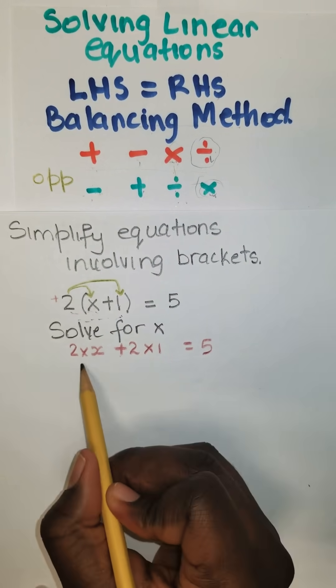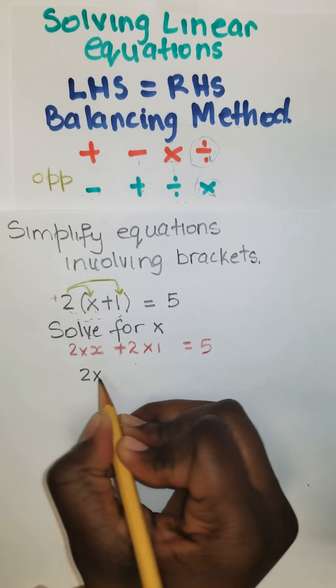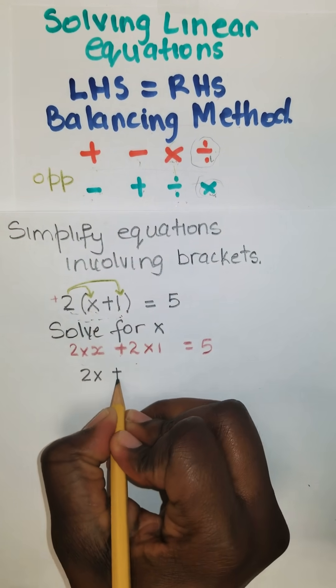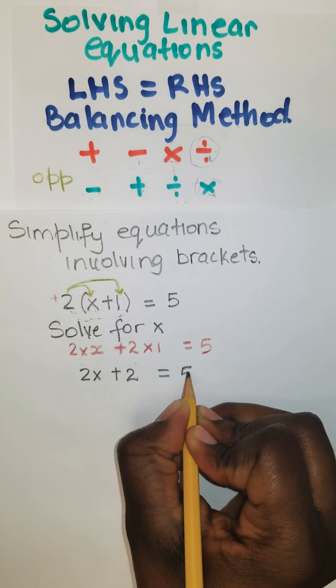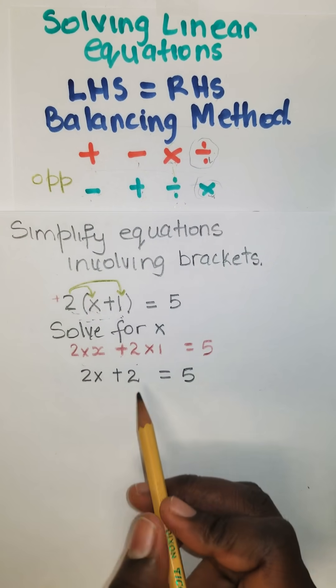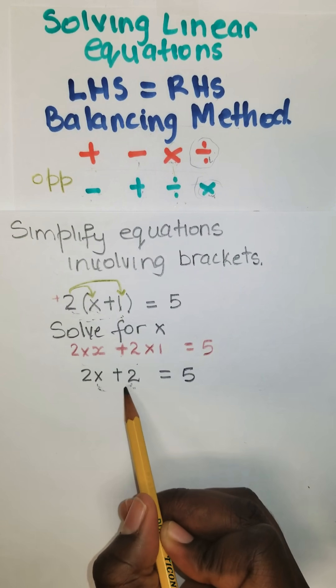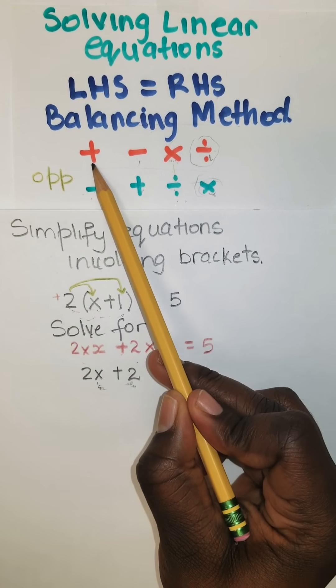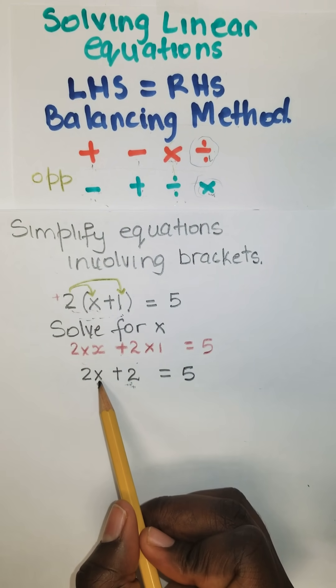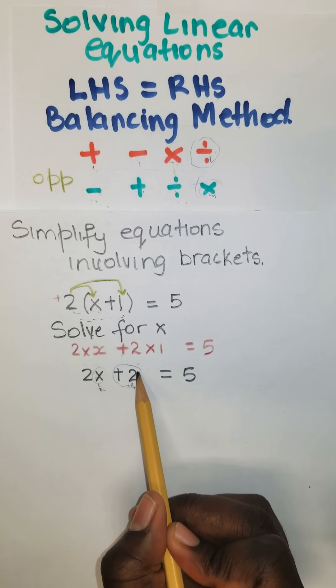Or you could say 2 times x is 2x. 2 times a positive 1 is also a positive 2, which is equal to 5. The next step is to identify the operation that is common between these two terms. These two terms are adding, so we know that once they're adding, we need to do the opposite, which is subtraction. Because we want to find the value of x, and it's attached to this 2, we have to get rid of this 2 first.